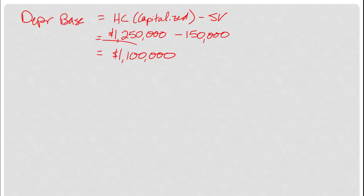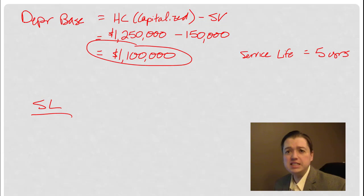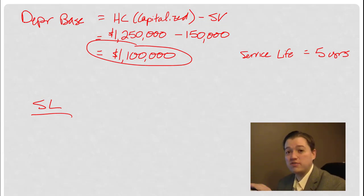Now that I have this number, the other number that I need is my service life — in this case, five years. Now I've got everything I need for straight-line depreciation. With an adjusting entry, we want to include the details as part of the description, so I want my equation not just off to one side, but as part of my journal entry.